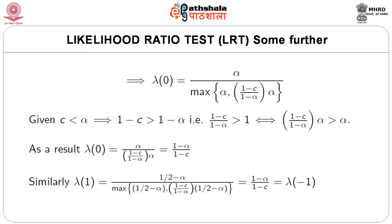This implies lambda(0) = alpha divided by max(alpha, (1-c)/(1-alpha)*alpha). Since c < alpha, we have 1-c > 1-alpha, so (1-c)/(1-alpha) > 1, and hence (1-c)/(1-alpha)*alpha > alpha. As a result, lambda(0) = alpha/[(1-c)/(1-alpha)*alpha], which simplifies to (1-alpha)/(1-c). Similarly, lambda(1) = lambda(-1) = (1-alpha)/(1-c).